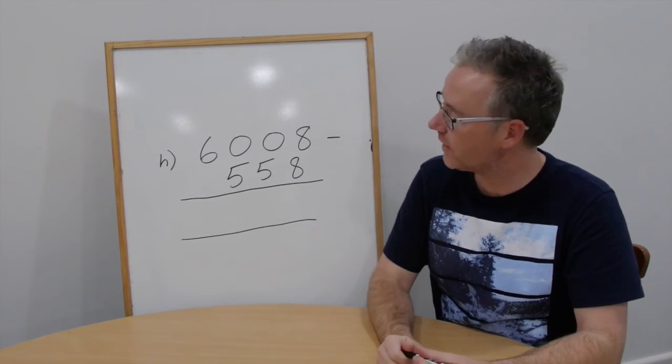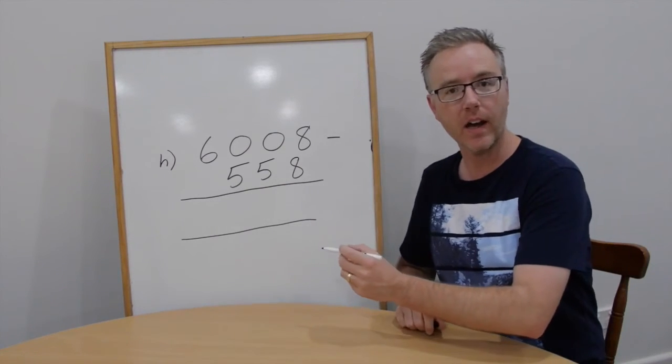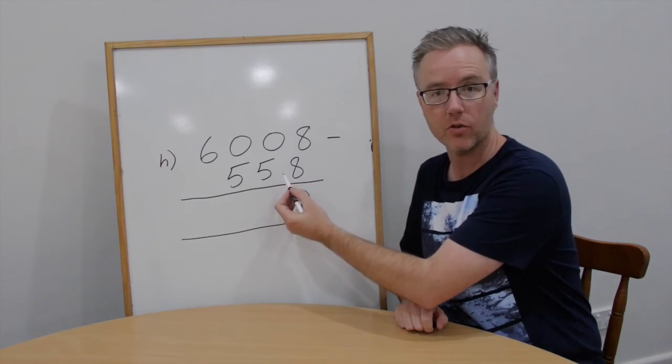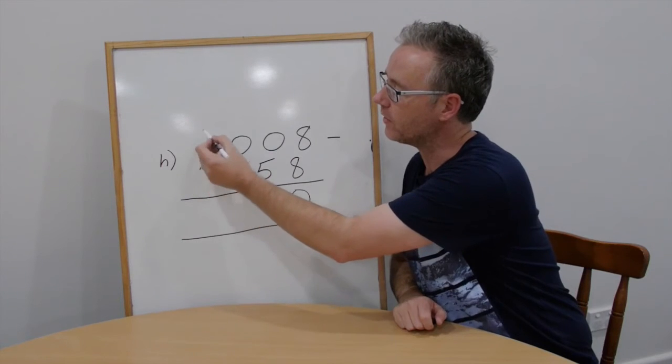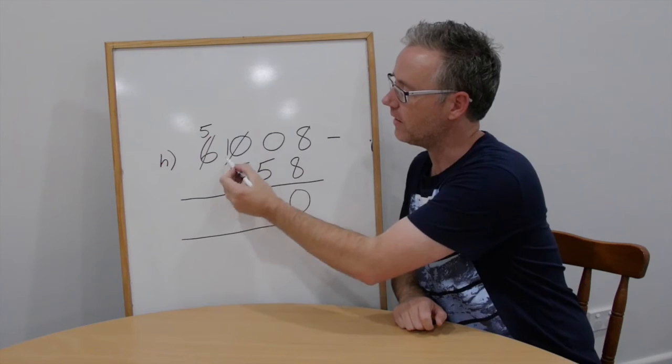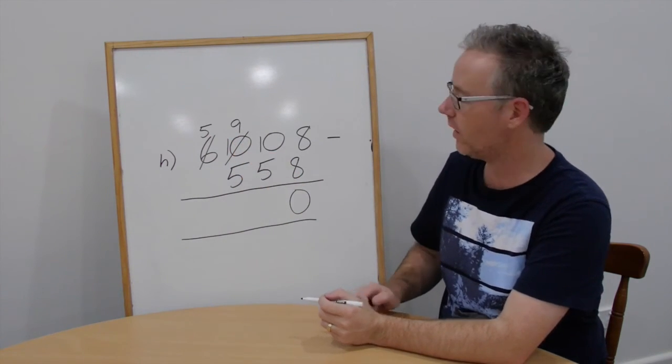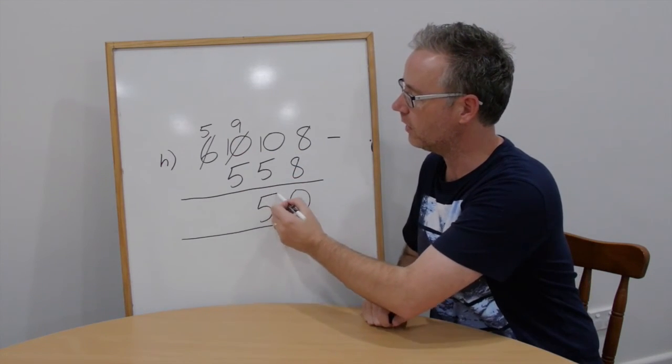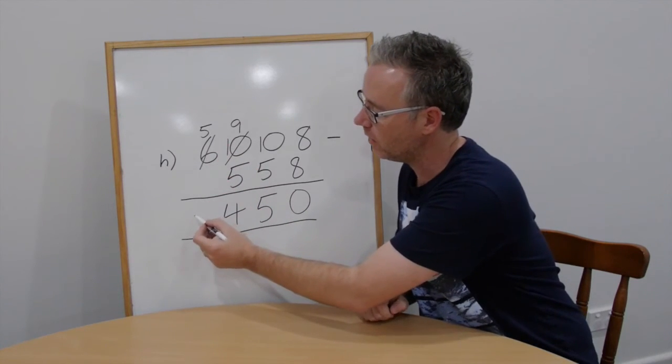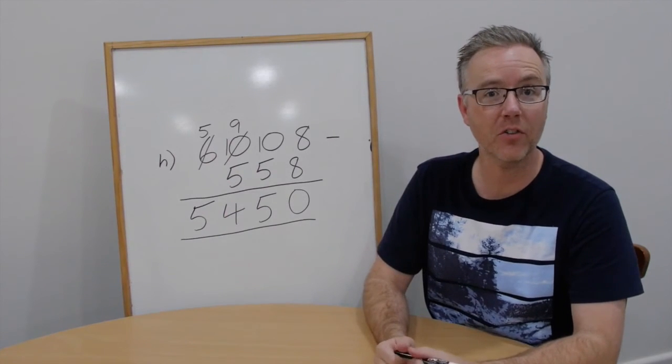Question H. We have 6,008 take away 5,558. 8 take away 8 is 0. And now 0 take away 5 I can't do. I need to trade all the way into the thousands column. Bring 1,000 into the 10 hundreds. Trade the 10 hundreds. We now have ten tens. Now we can work it out. 10 take away 5 is 5. 9 take away 5 is 4. And 5 take away 0 is 5. Answer, 450. How did you go?